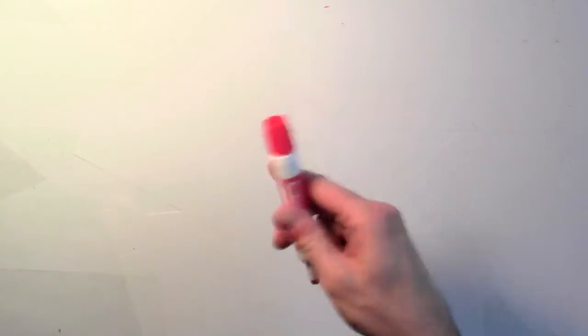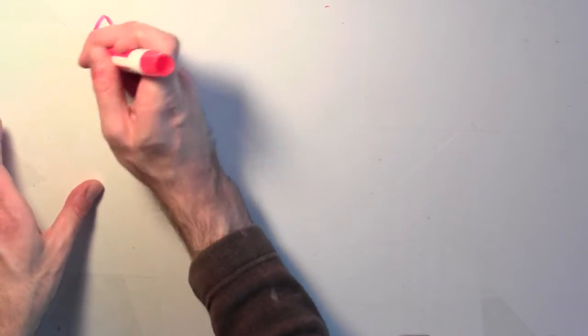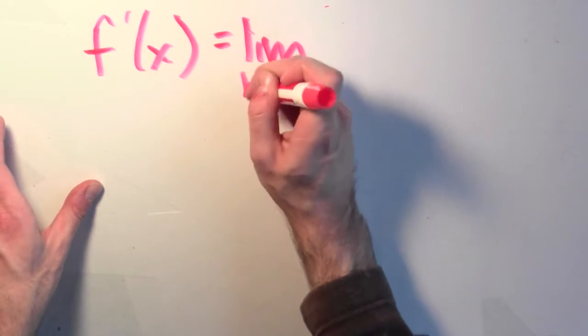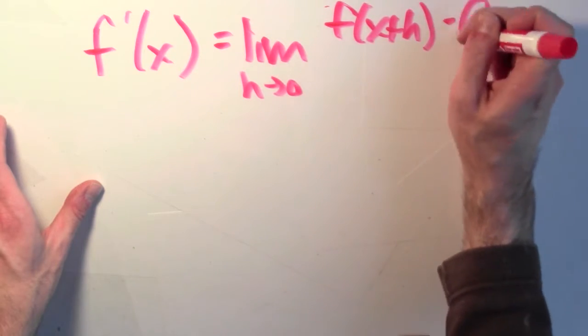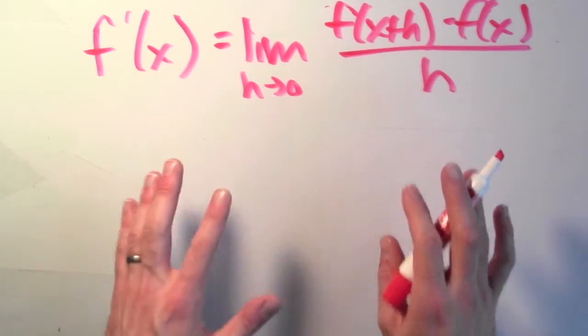Where does this formula actually come from? Well, let's think back to the definition of derivative. What's the definition of derivative? The derivative of f at x is the limit as h approaches 0 of f(x+h) minus f(x) all over h. That's the definition of derivative.